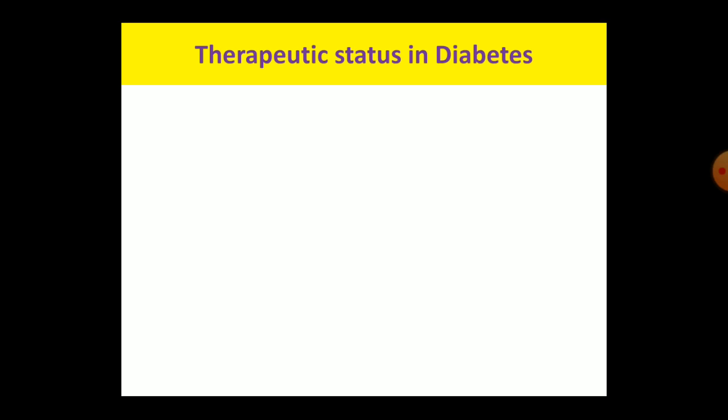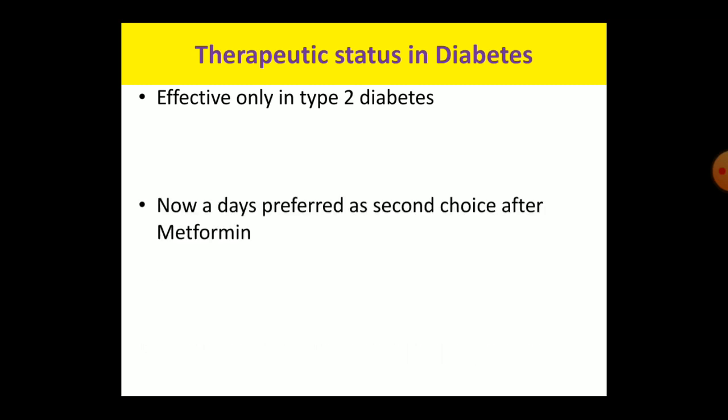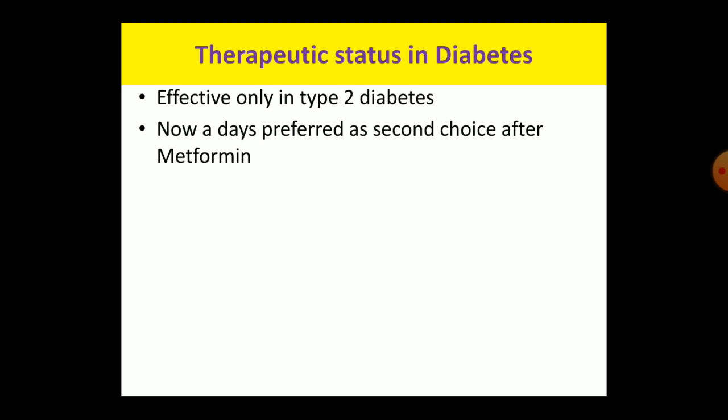The therapeutic status in diabetes is very important. These drugs are effective only in type 2 diabetes and not effective in type 1. Previously, sulfonylureas were considered the drug of choice for newly detected type 2 diabetes. But now they are not considered drug of choice and their status is inferior to that of metformin. If the person is not responsive to the maximum dose of metformin, one can add on or switch over to sulfonylurea. The reason lies in the natural progression of type 2 diabetes and the mechanism of action of sulfonylureas.